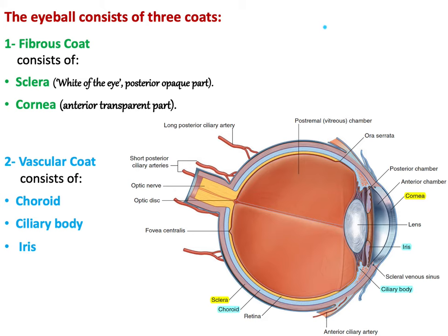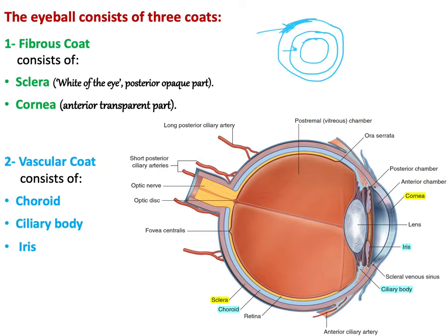The eyeball is composed of three coats — layers over each other. The most external one is the toughest, called the fibrous coat. The second one is the vascular coat, and the inner one is the retina, also called the nervous coat.